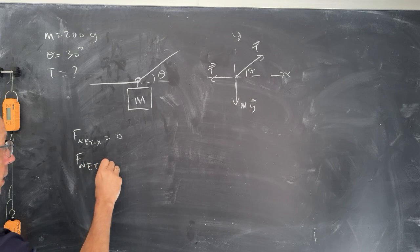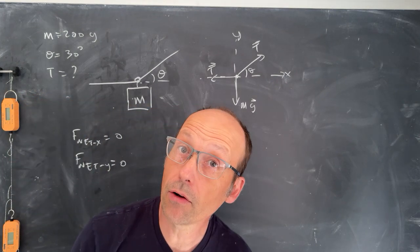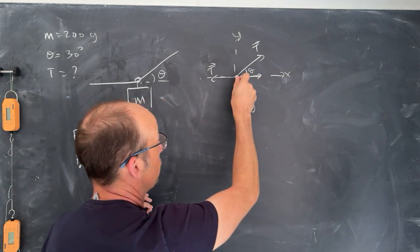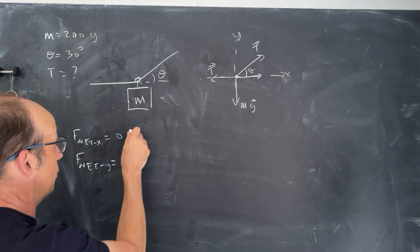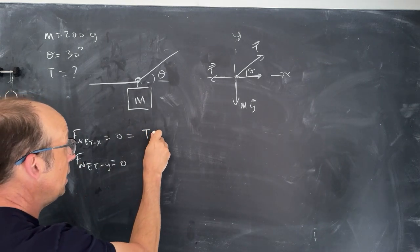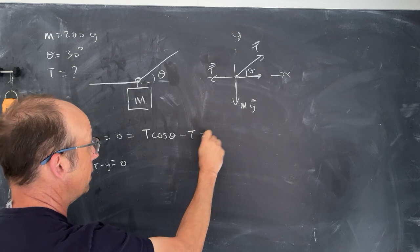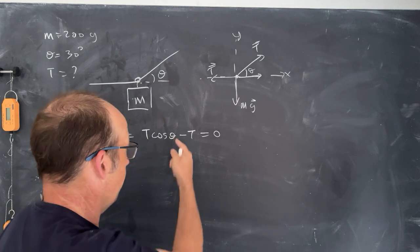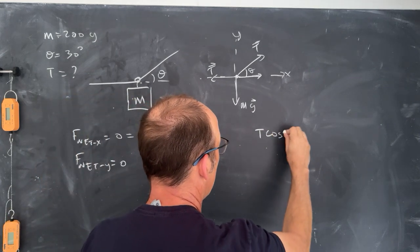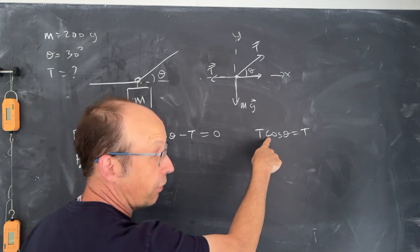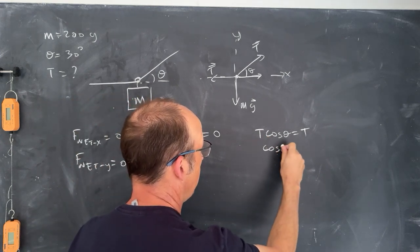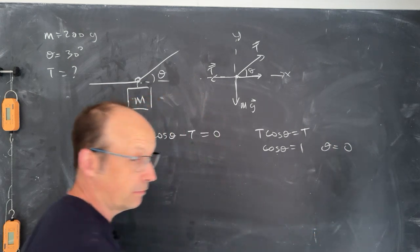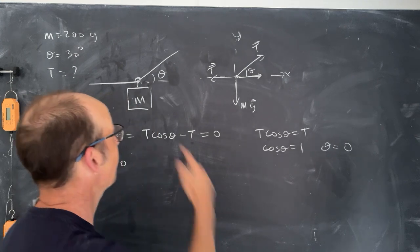In the x direction, I have this component of tension in the x direction and that tension in the y direction. You can see where the problem is already. So I have t cosine theta minus t equals zero. Now can I solve for t? I know theta. Well, t cosine theta equals t. I can add that to both sides. I can divide both sides by t and I get cosine theta equals one, or theta is equal to zero degrees, which is not true. I already said it was 30.